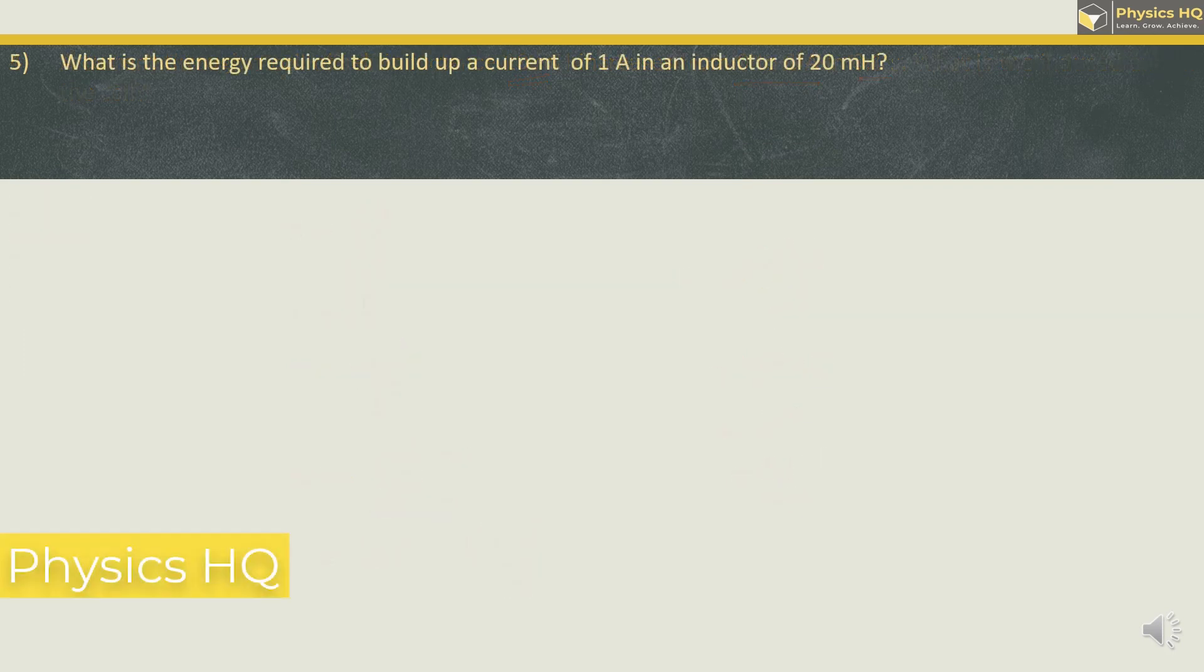What is the energy required to build up a current of 1A in an inductor of 20 mH? The options are 10 mJ, 20 mJ, 20 mJ or 10 J.